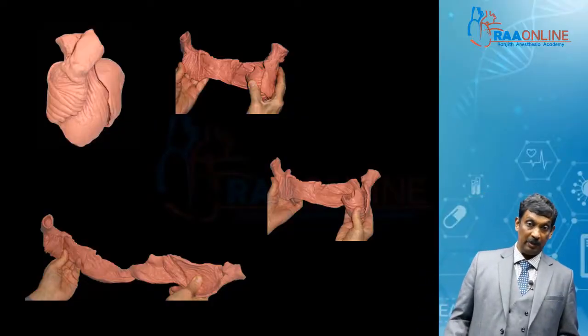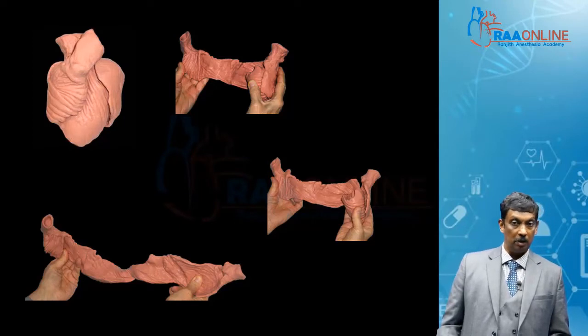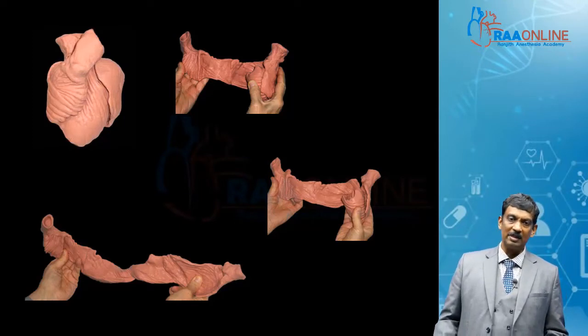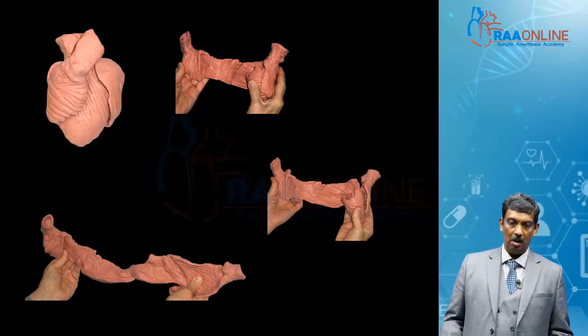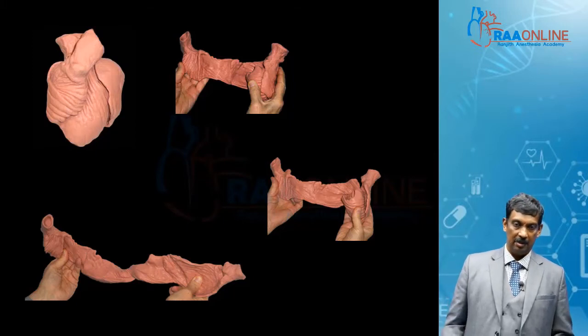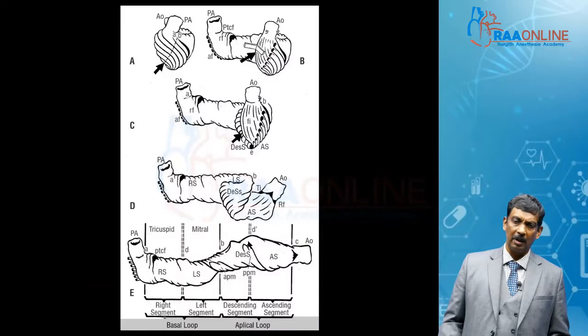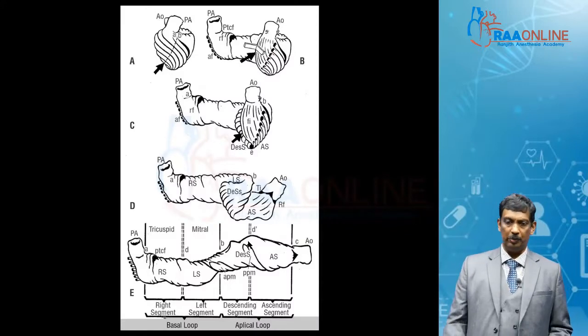What has impressed me is this work of Francisco Torrent Guasp. Guasp believed that the entire ventricular muscle was one long rope-like muscle fiber, and he dissected it out like this. We have a basal loop and apical loop.